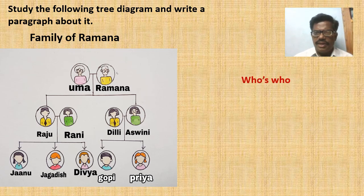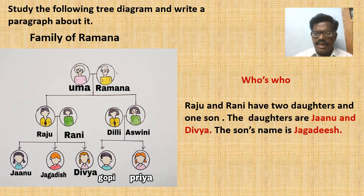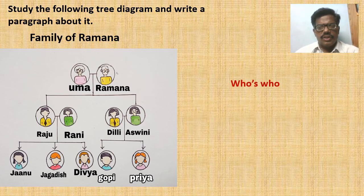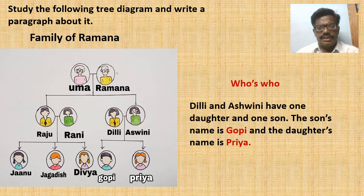Going down further in the diagram, they may write like this: Raju and Rani have two daughters and one son. The daughters are Janu and Divya. The son's name is Jagadish. Students will also write like this: Dili and Asvini have one daughter and one son. The son's name is Gopi and the daughter's name is Priya.